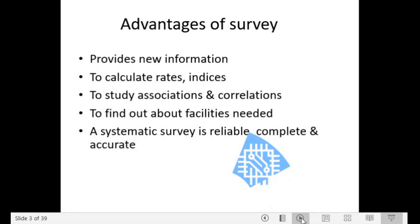A survey provides new information, helps you calculate rates and indices, and helps you study associations and correlations — for example, the correlation between consumption of sugary snacks and developmental dental caries. It helps you find out about the facilities needed: if decay is prevalent in a population, you can determine how many dentists, how much manpower, and how much material is required. If reliable, complete, and accurate, a survey will make a difference in treating disease and controlling the problem.